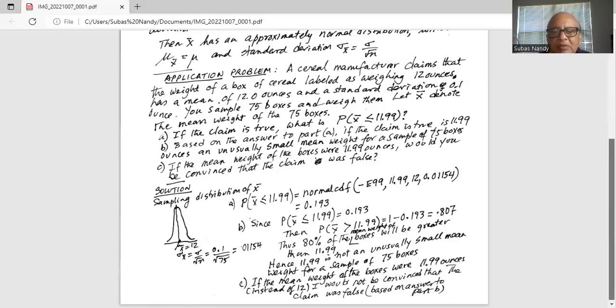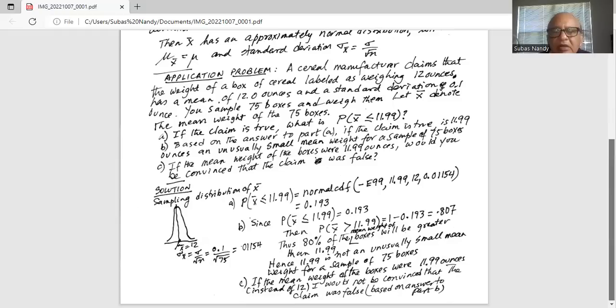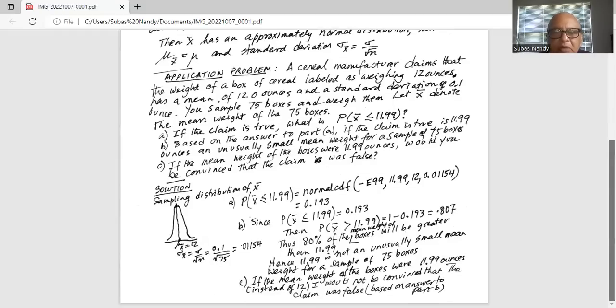So, there is a 19.3% chance that the mean of this sample will be less than or equal to 11.99.